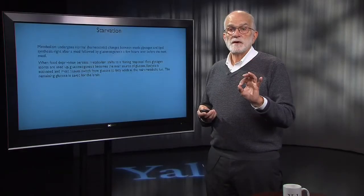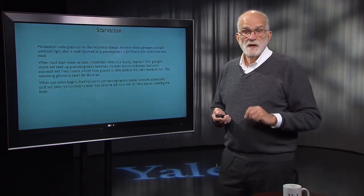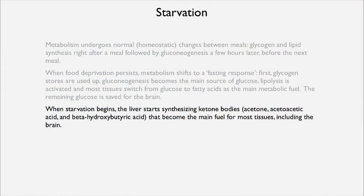Fat starts to be broken down in lipolysis, and most of the tissues in the body switch from glucose to fatty acids as the main metabolic fuel. The remaining glucose is saved for the brain, and you will see that the brain is prioritized through a variety of physiological processes. When starvation begins, the liver starts synthesizing ketone bodies — acetone, acetoacetic acid, and beta-hydroxybutyric acid — which then become the main fuel for most tissues, including the brain.